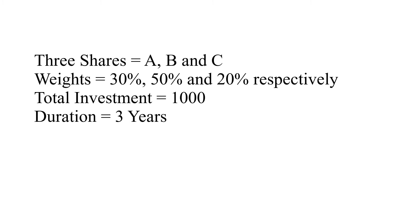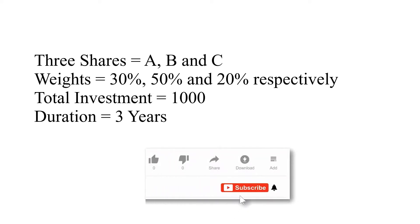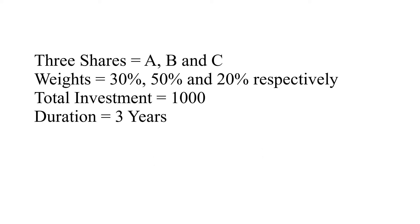Let's start with a very simple example. I have three shares A, B, and C with different weights: 20 percent, 50 percent, and 30 percent, and the sum of weights is equal to one. The total investment I have made is 1,000, so 300 will be invested in A, 500 in share B, and the remaining 200 in share C.